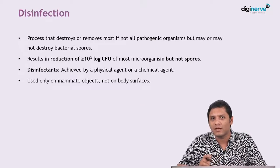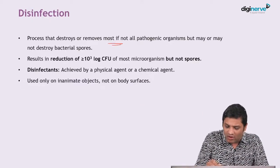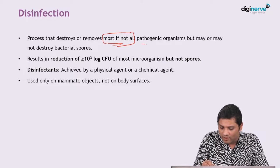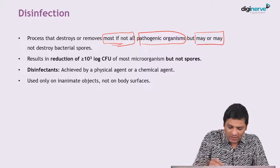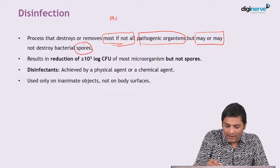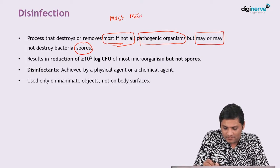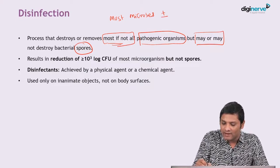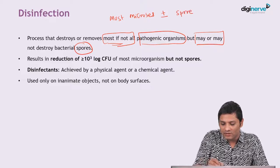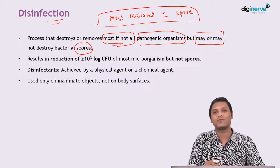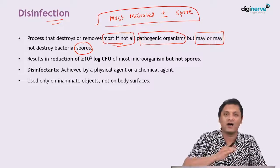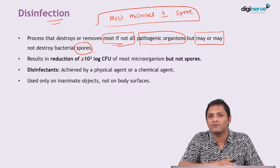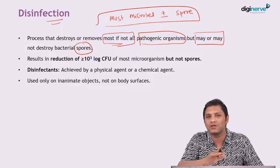The next terminology is disinfection. Disinfection is defined as a process by which most, if not all, microorganisms are destroyed or removed, plus or minus removal of spores. So it can destroy most of the microbes but not all, and it may or may not be able to destroy spores. Disinfection refers to a lesser ability to kill organisms, whereas sterilization refers to the absolute ability to kill all microorganisms including spores.